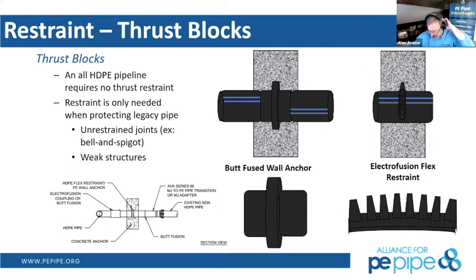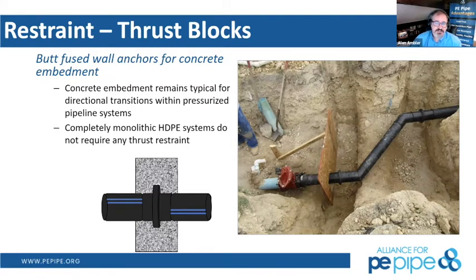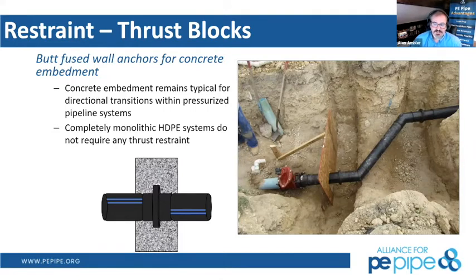The polyethylene industry has created different types of restraints for connecting to bell-and-spigot systems. The photograph shown is prior to pouring a concrete thrust block. The old practice of over-pouring concrete creates a massive block that needs to be excavated if you ever need to do something to that pipeline in the future. It's not good practice to pour too much concrete within it, because it becomes somebody else's problem down the line.